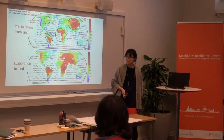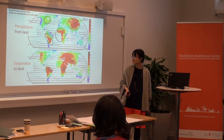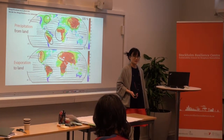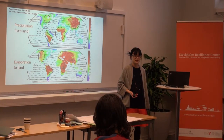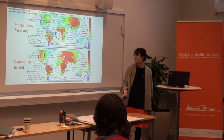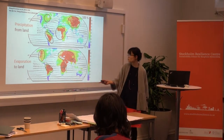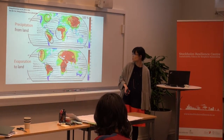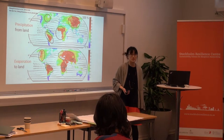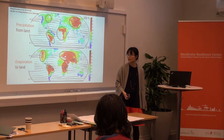The reverse map shows where evaporation goes. The redder the area, the more of the evaporation in that area goes to rainfall overland. You can see that in the Amazon region, a large portion — up to 80% — of the evaporation comes down as rainfall again on land.